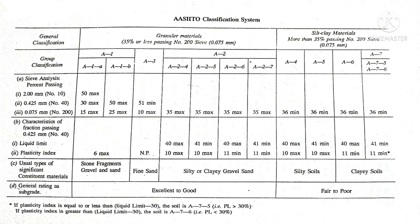The soil with the lowest number, A1, is the most suitable as highway material or subgrade. In general, the lower the number of the soil, the more suitable it is. For example, soil A4 is better than soil A5.